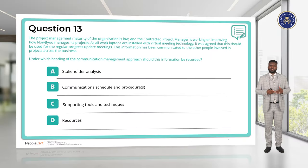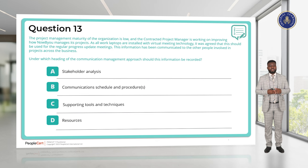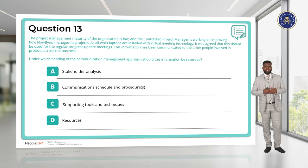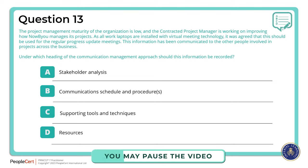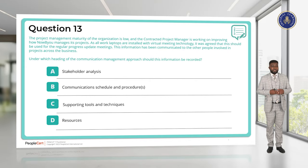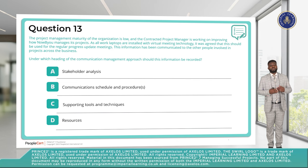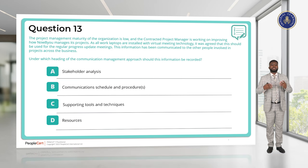Question 13. The project management maturity of the organisation is low. As all work laptops are installed with virtual meeting technology, it was agreed this should be used for regular progress update meetings. This information has been communicated to people involved in the project across the business. Under which heading of the communication management approach should this information be recorded? It's not stakeholder analysis, not resources, not the communication schedule — it is one of our supporting tools and techniques. We've decided to use virtual meeting technology as a tool to facilitate communication. The answer is C.